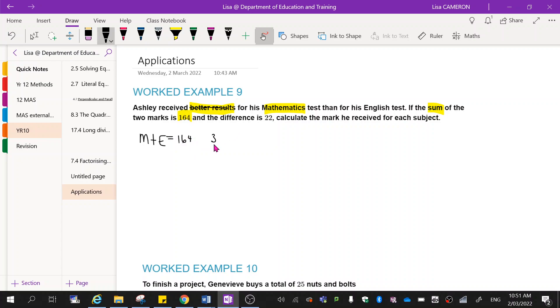And maths is the bigger number. Okay, so the difference is 22. So maths minus English equals 22.